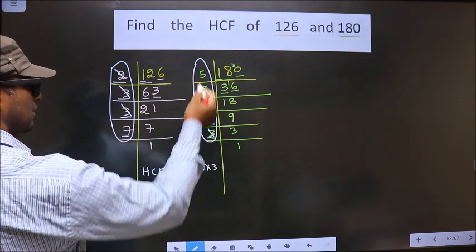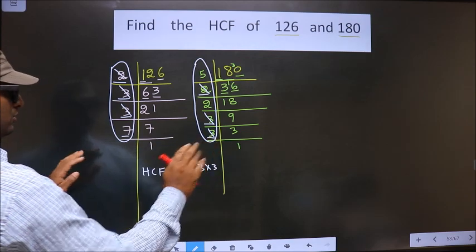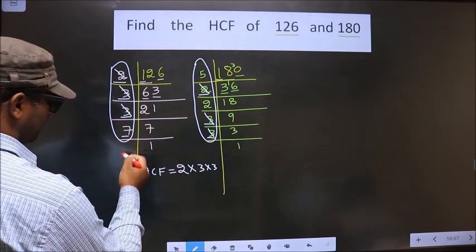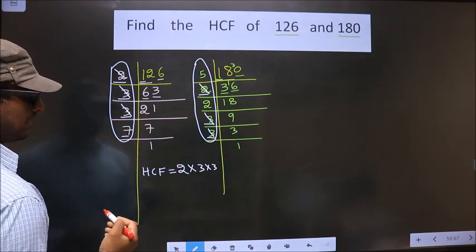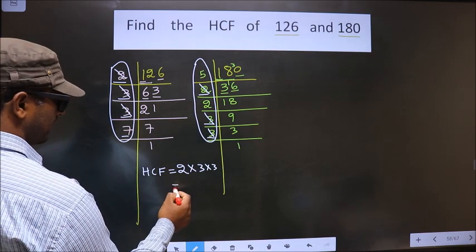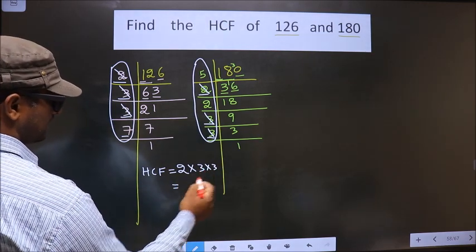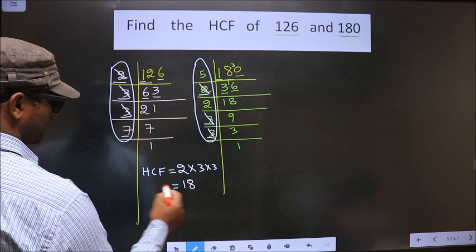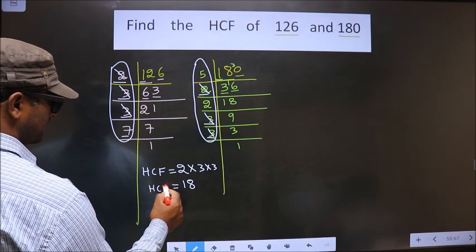Next number is 7. Do we have 7 here? No. No more numbers are left. So our HCF is 2 times 3 is 6. 6 times 3 is 18. So 18 is our HCF.